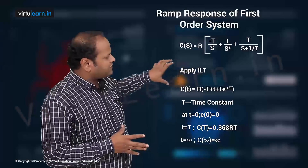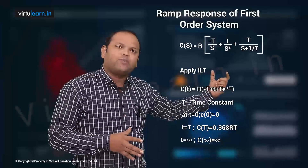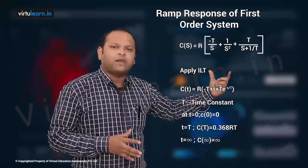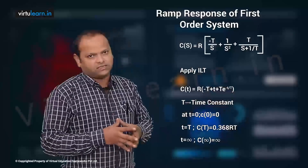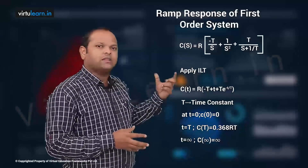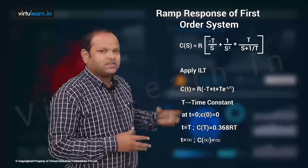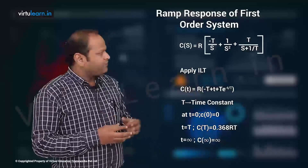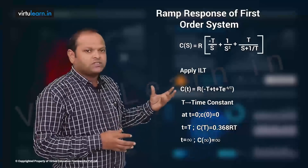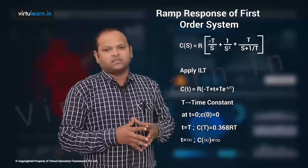Out of this response, T·e^(−t/T) is the transient term and T − t is the steady state term. So we have both steady state as well as the transient.